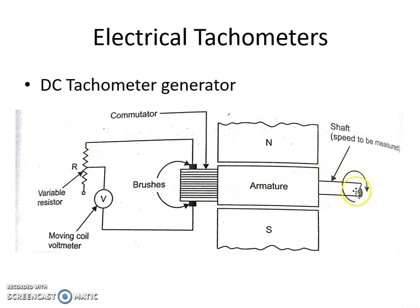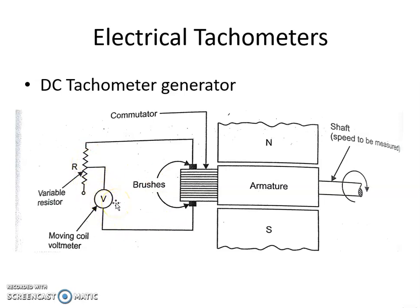Whenever the armature rotates, it induces voltage across the brushes, which is measured by the voltmeter. As the angular velocity increases, the voltage or EMF developed also increases. Therefore, the EMF induced is directly proportional to the angular velocity. A variable resistor is used to limit the flow of current to the voltmeter. In this way, the angular speed can be measured by means of a DC tachometer generator.